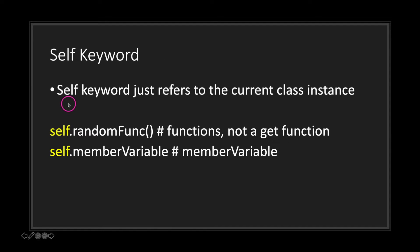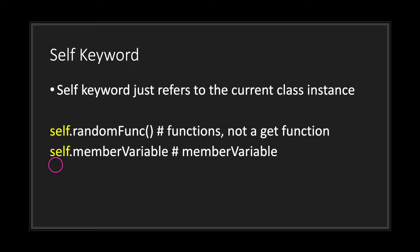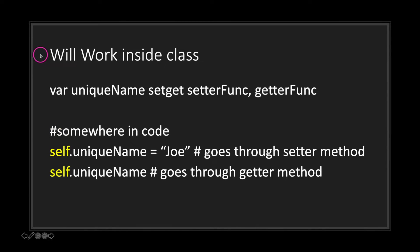The self keyword refers to the current class instance — in other languages it could be the keyword 'this'. The keyword is spelled 'self' followed by dot notation followed by either a function or a member variable. The self keyword can refer to any type of class member and any type of class method. However, the self keyword is needed when you want to actually access the member variable's setget functions.